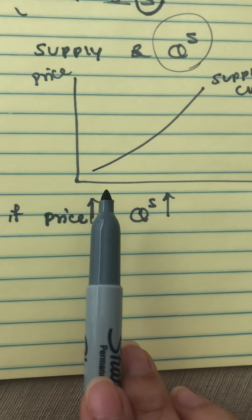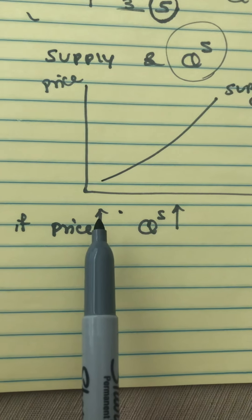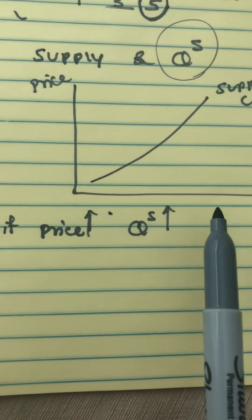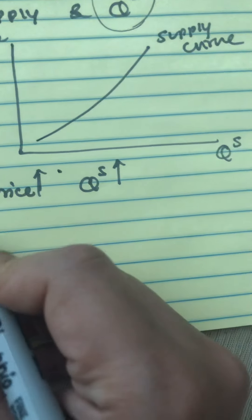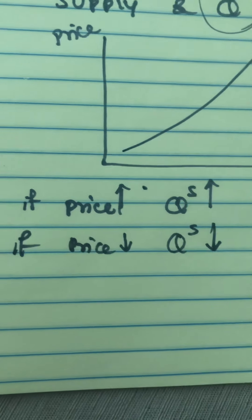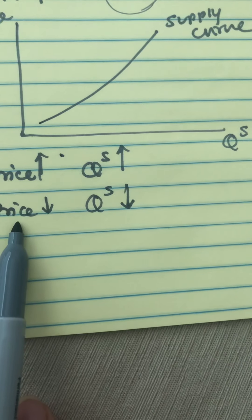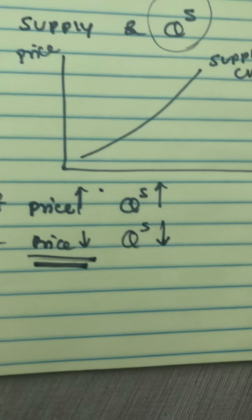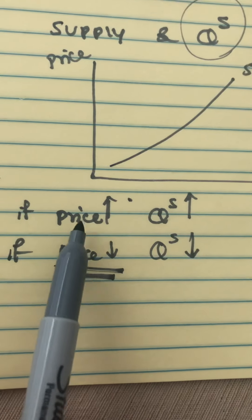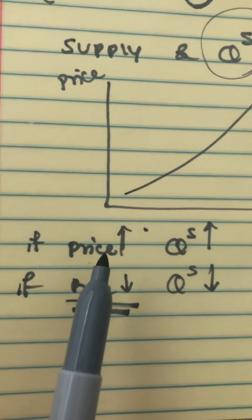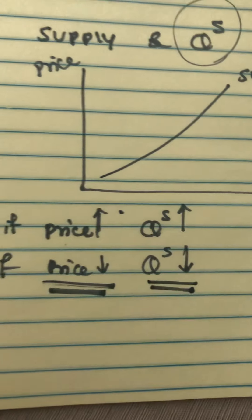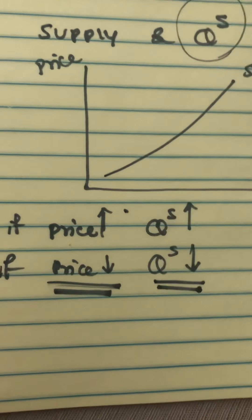As a seller, the only thing you care about is profit. If the market price is higher, you can make more money by selling more output, so you increase your quantity supplied. But if the price of your product goes down, you are going to sell less, because profit is going down. You'll wait for the price to spike back up, cutting back output until the price is higher again.